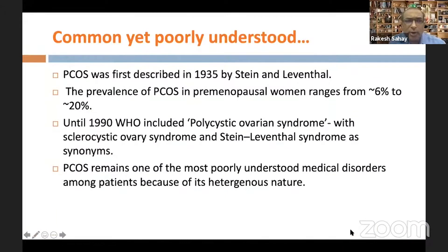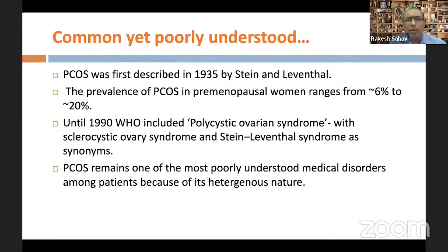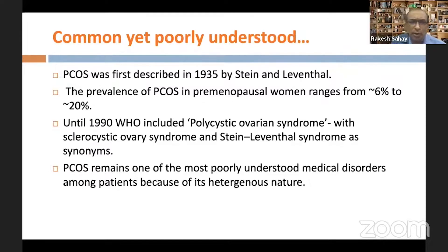PCOS is a very common condition with a prevalence ranging from anywhere between 6 to 20 percent, depending on what population we're looking at. It was first described way back in 1935 by Stein and Leventhal. There has been a lot of confusion because this is a very heterogeneous disorder, and although we have learned a lot, we still need to understand more every year.